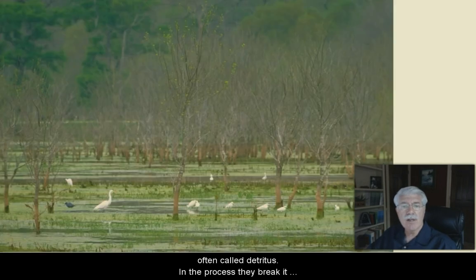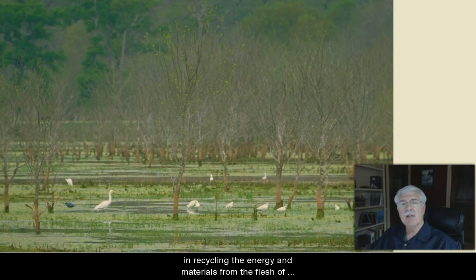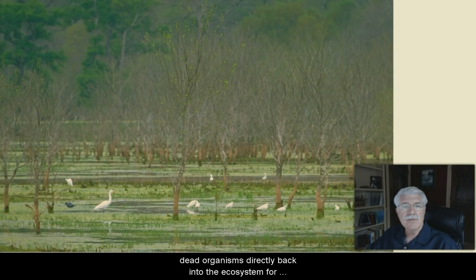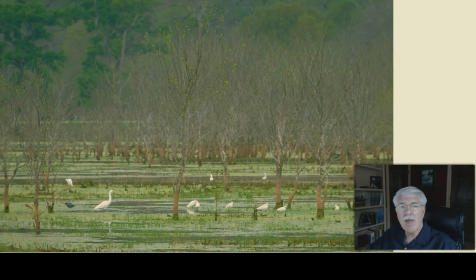Decomposers, such as bacteria and fungi, also feed on non-living organic matter. We often call this detritus. In the process, they break it down into simple molecules that plants can use. Scavengers and decomposers play a vital role in recycling the energy and materials from the flesh of dead organisms directly back into the ecosystem for producers and other consumers to use.